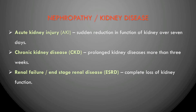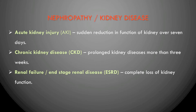Nephropathy, or kidney diseases, cause certain conditions in the body. The first is acute kidney injury, previously called acute kidney failure. Whenever there is a reduction in kidney function — that is, excretion of waste products — for seven days, we call that condition acute kidney injury or AKI.